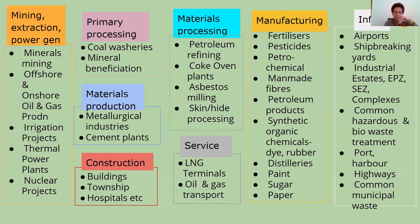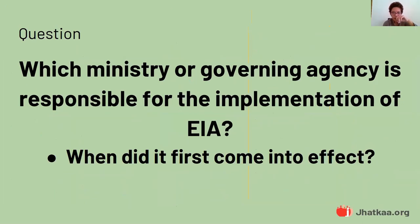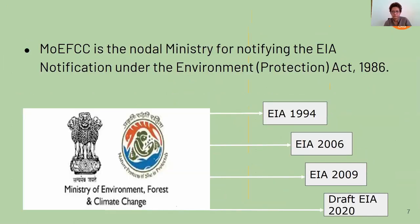Which ministry is responsible for implementing the EIA? MoEF&CC — the Ministry of Environment, Forest and Climate Change — is the nodal ministry for notifying the Environmental Impact Assessment notification, which is backed by the Environment Protection Act 1986. The very first EIA notification arose in 1994, and the most recent one is the Draft EIA 2020 notification, which was absurdly released during a nationwide lockdown.